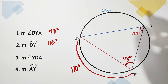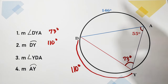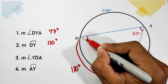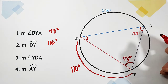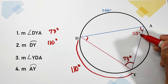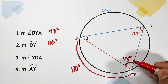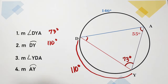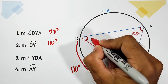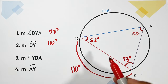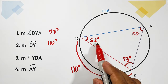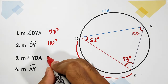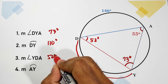We can find the measure of angle YDA since we have 180 minus 55 minus 73, and that equals 52 degrees. So angle YDA is 52 degrees.